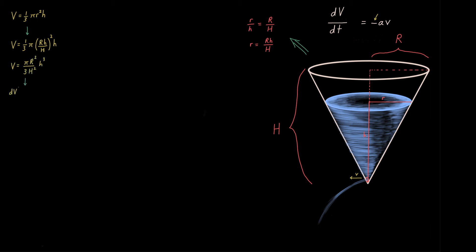So using similarity, we get lowercase r always being capital R over H times lowercase h. Throw that into V, common cal 1 little move there, gives V as a function of h, which enables us to take dv/dh, that derivative with respect to h.